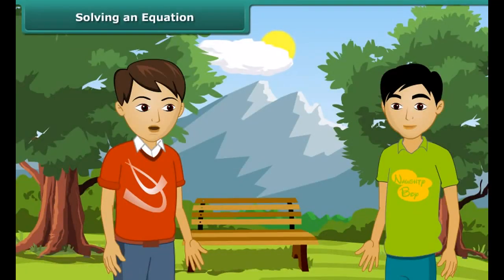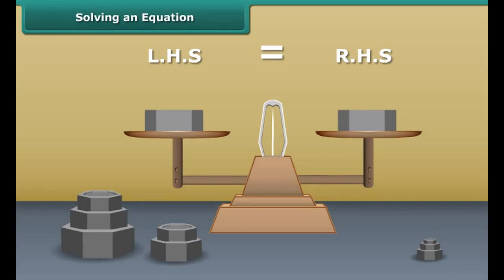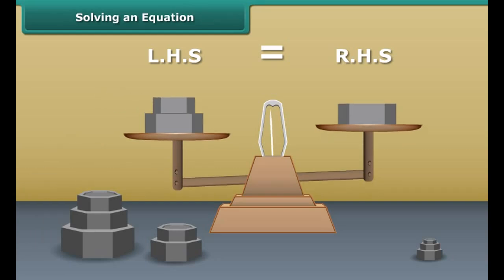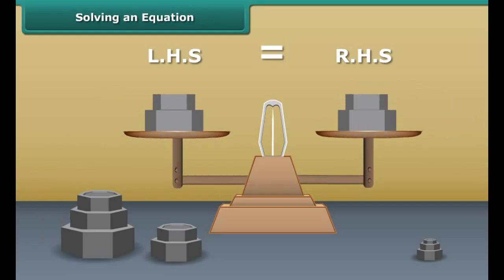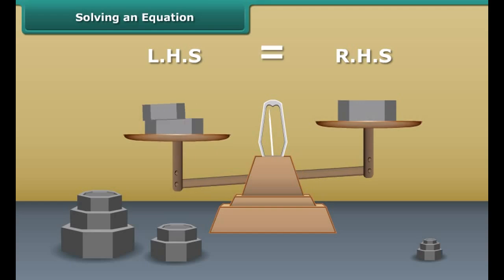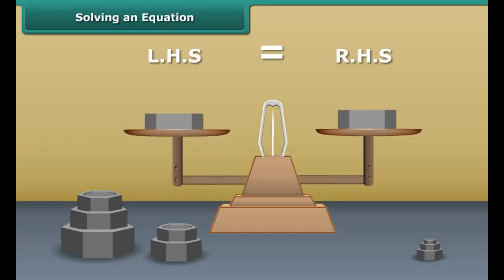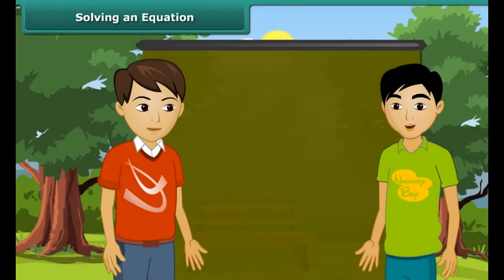How do we solve an equation? A balanced equation is like a weighing balance with equal weights on both its pans. If we add the same weights to both the pans, the arm remains horizontal.